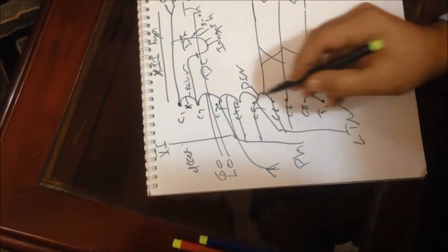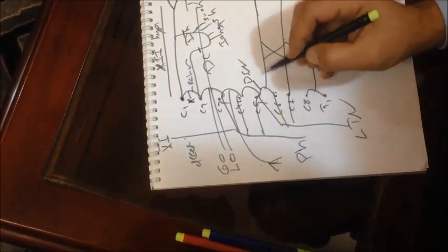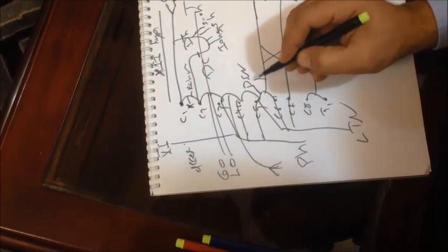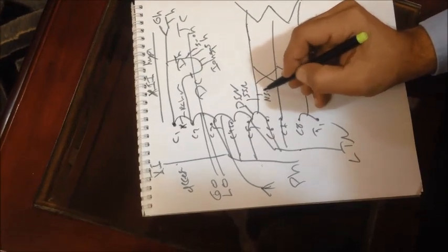And long thoracic nerve from the root C5, C6, C7. Also we have upper trunk: suprascapular nerve and nerve to subclavius.